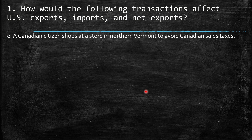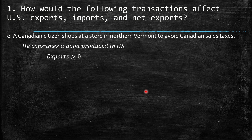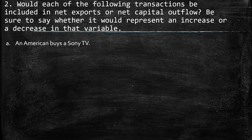E: A Canadian citizen shops at a store in Northern Vermont to avoid Canadian sales tax. Even with the taxes being avoided, he is consuming a good produced in the US. As a consequence, we have an export higher than zero — an increase — so a net export higher than zero.